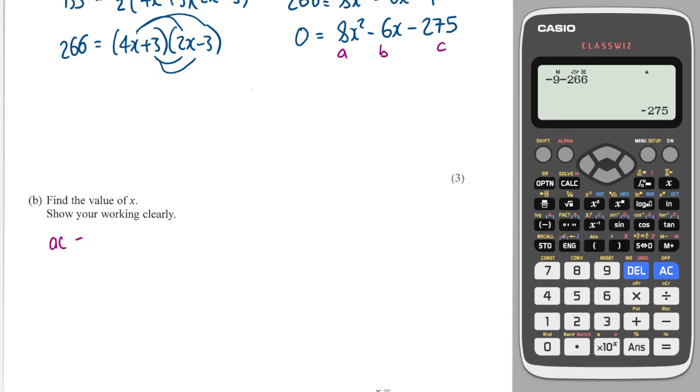So, you have to do A times C, which is going to be 8 times minus 275, which is minus 2,200. And then the B value is the one in the middle, which is minus 6.